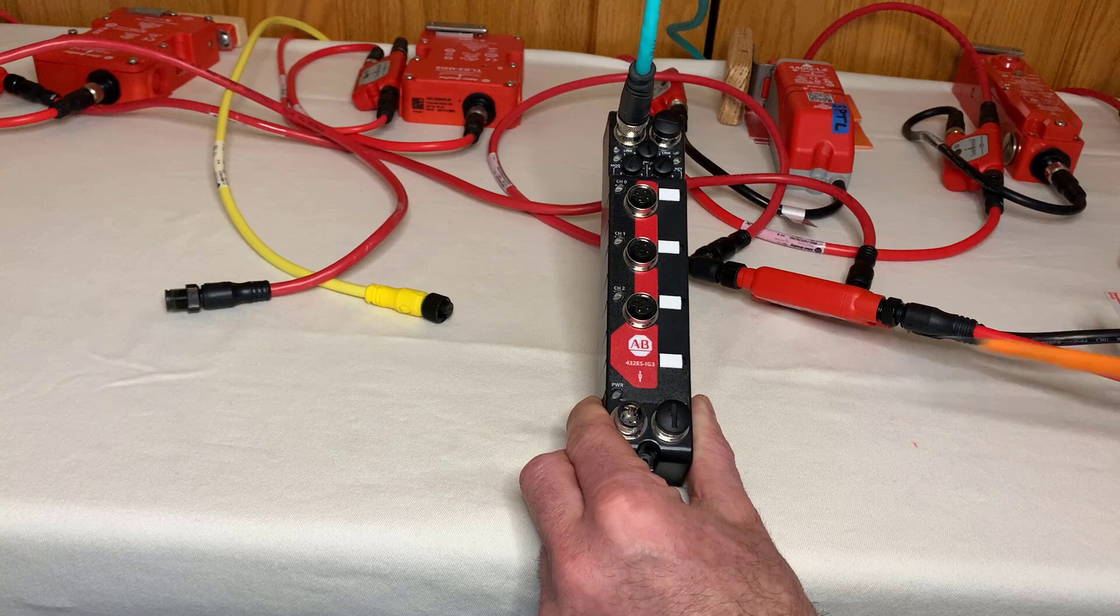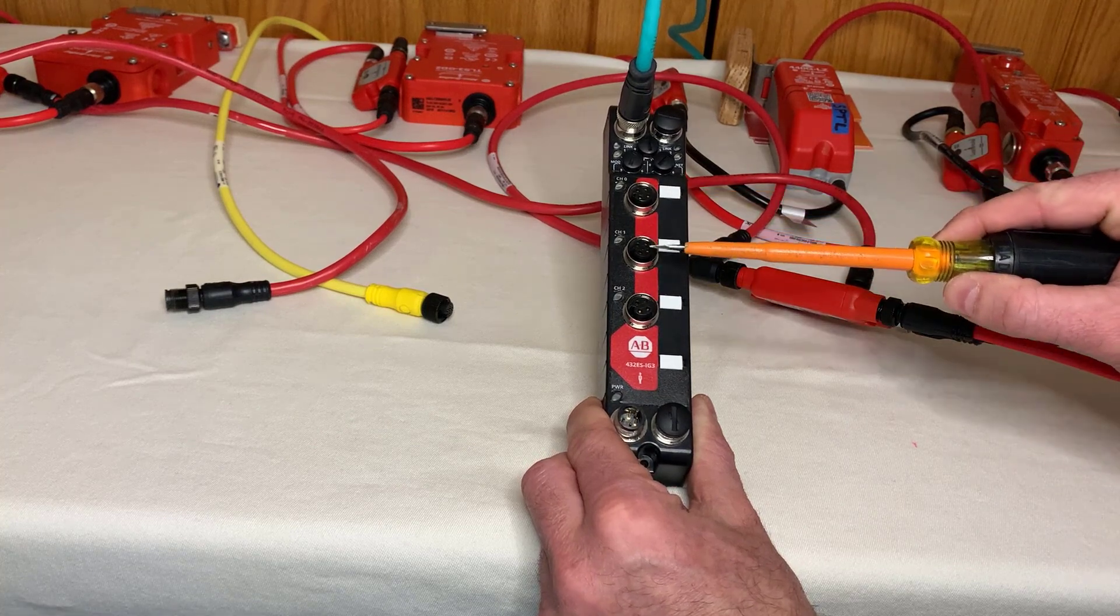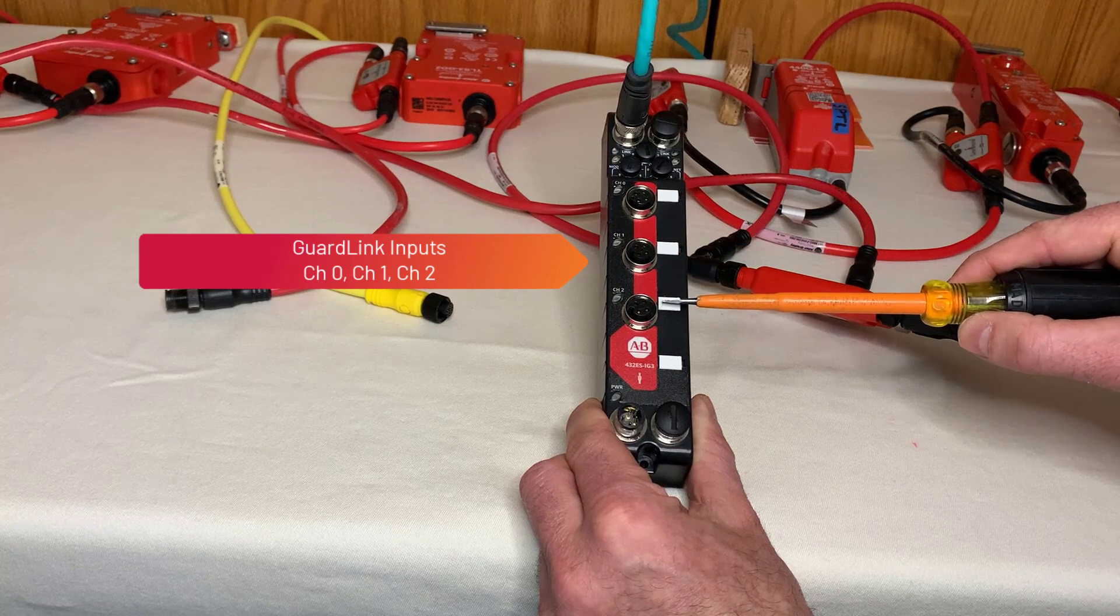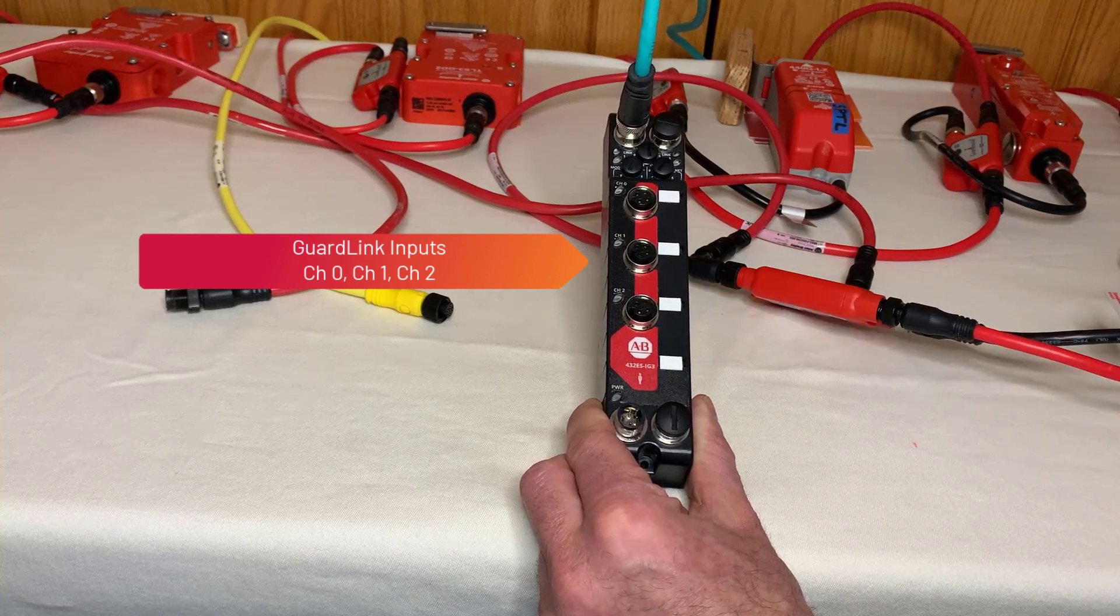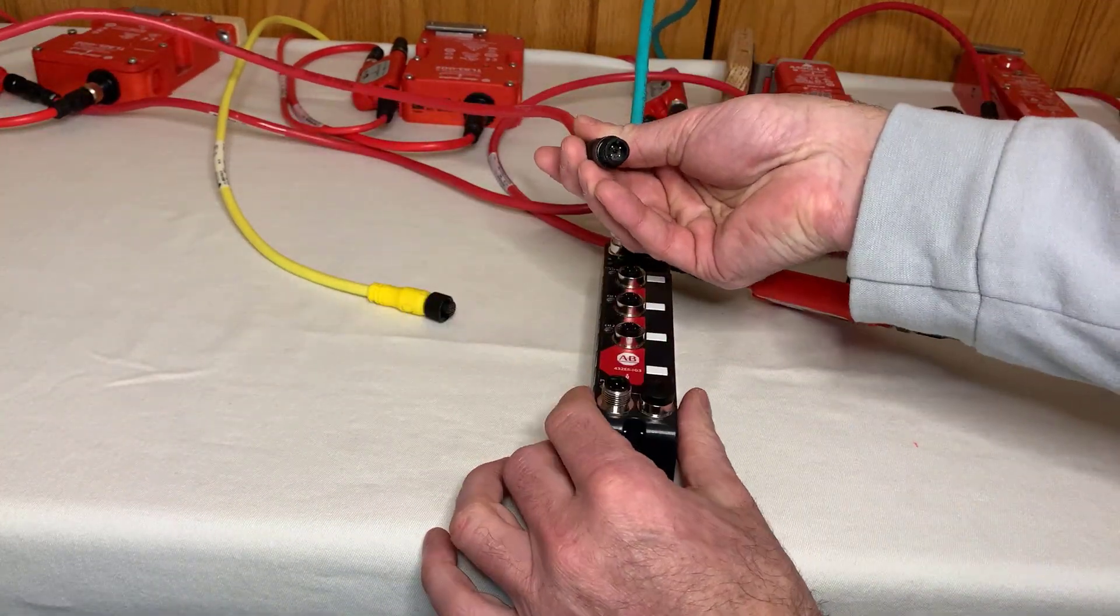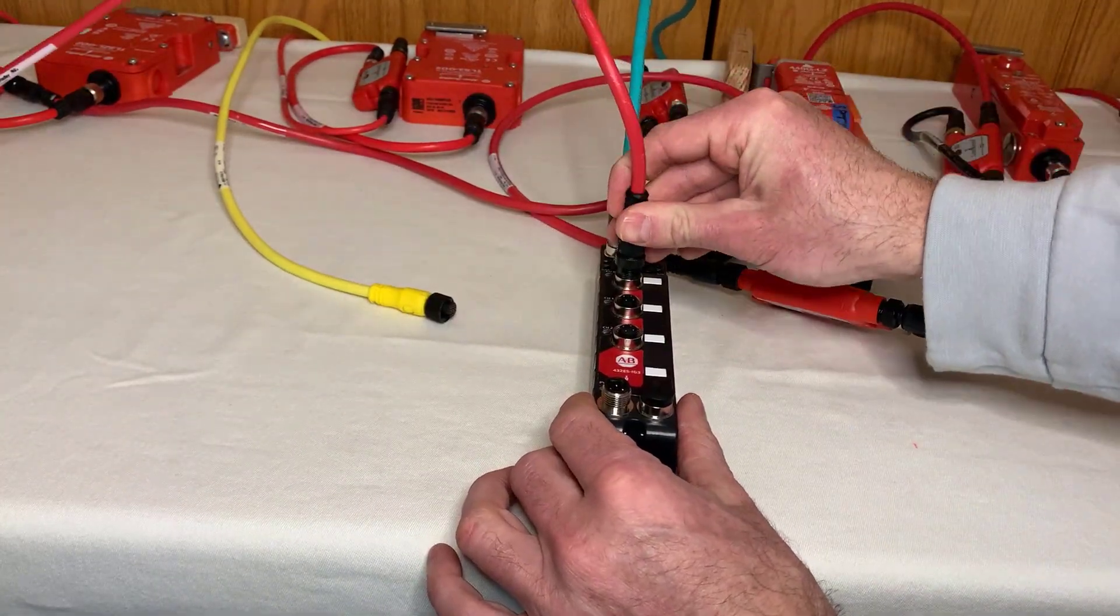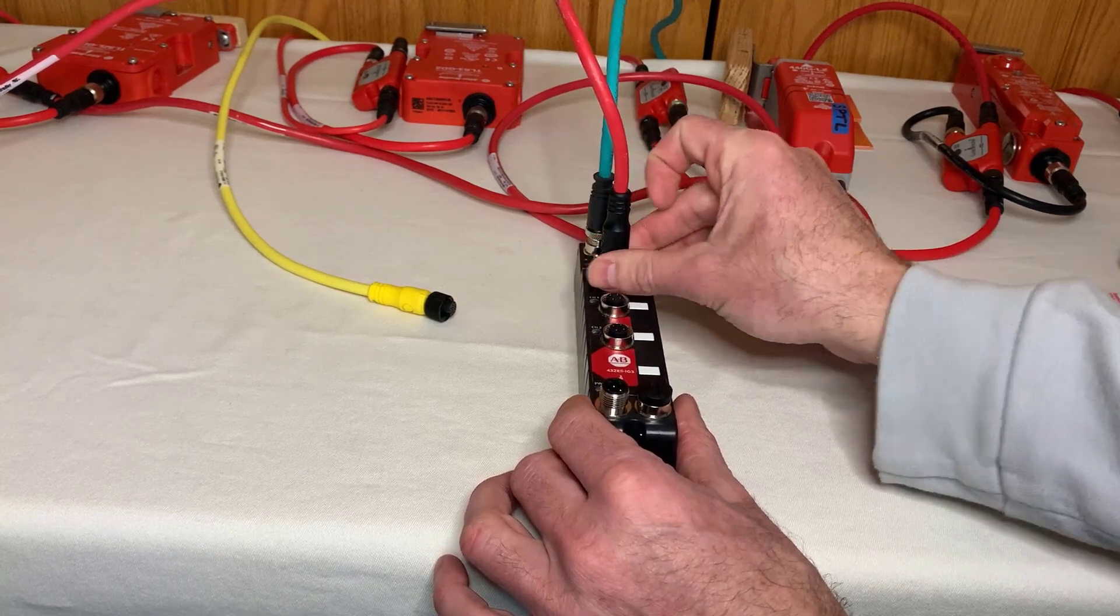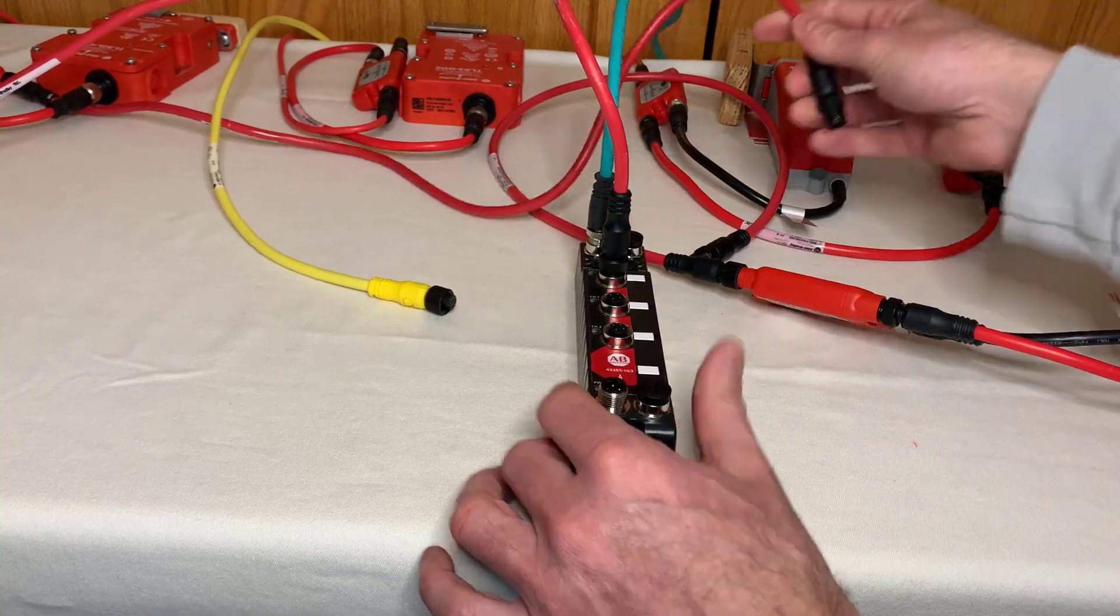The three 4-pin M12 plugs are labeled Channel 0, Channel 1, and Channel 2. These are the three GuardLink safety inputs. A 4-pin M12 trunk cable is used to connect the GuardLink interface to the first GuardLink tap of each channel. Each GuardLink channel is capable of monitoring 32 devices.